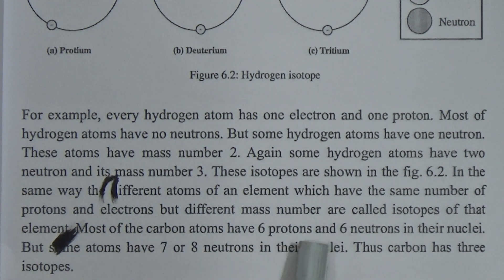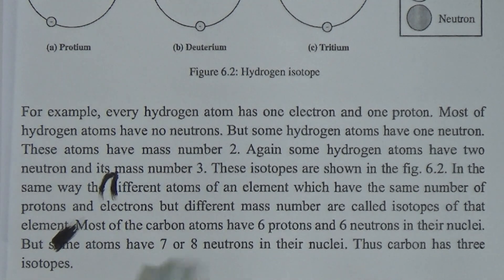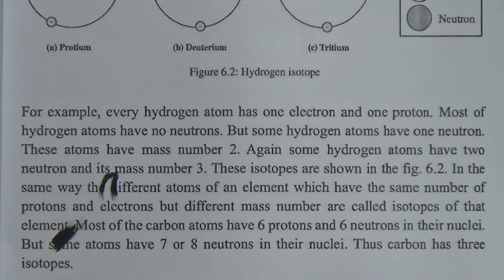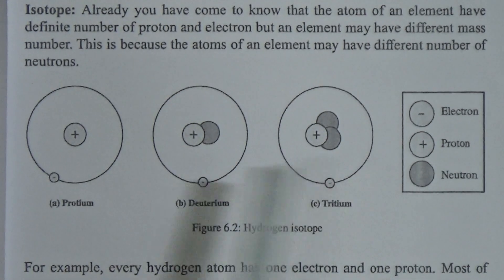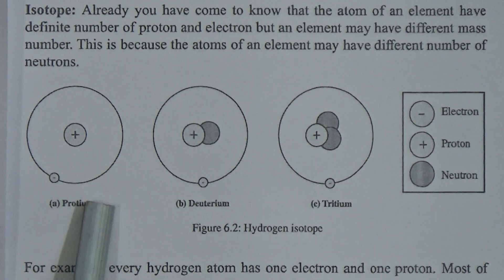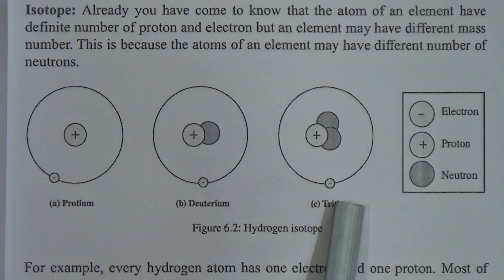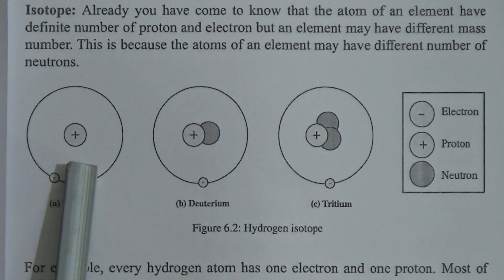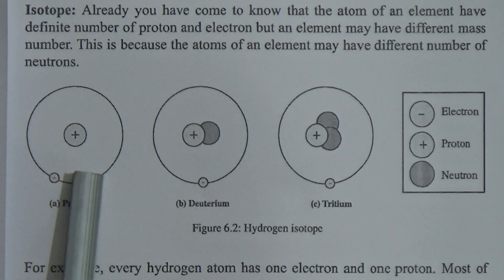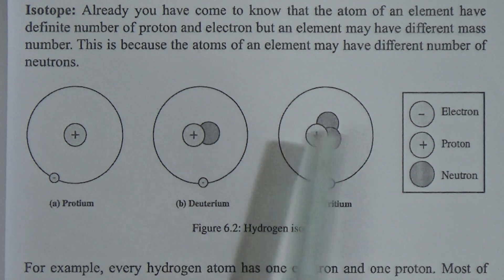Most carbon atoms have six protons and six neutrons in the nucleus, but some carbon atoms have seven or eight neutrons in the nucleus. Thus carbon has three isotopes. Hydrogen has three isotopes: protium, deuterium and tritium. In protium, the proton number is one and neutron number is zero; in deuterium the mass number is two; and in tritium the mass number is three.